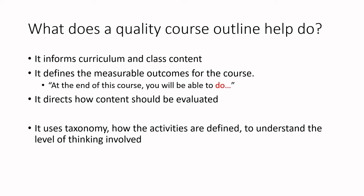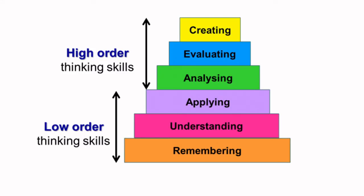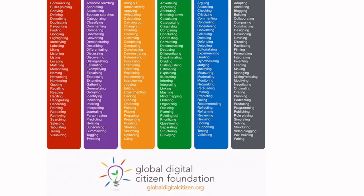That evaluation is linked to those verbs. Using taxonomy is going to define how the activities are done and define that level of thinking and rigor relevance. Just a quick reminder: we talked about Bloom's Taxonomy and the fact that we are focused as much as possible in CBET on higher order thinking skills. While there is importance for lower order thinking skills — remembering and understanding — usually in CBET we try to start at the application phase as fast as possible, assuming those lower order skills are being developed in tandem.